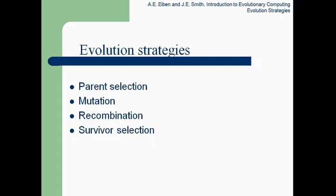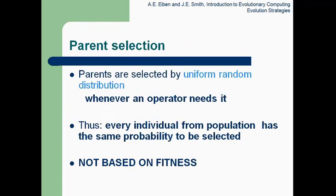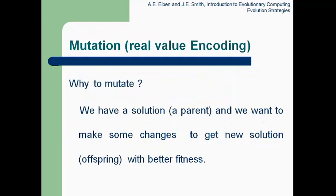Let us start with evolution strategies. In evolution strategies we will learn parent selection, mutation, recombination, and survival selection. For parent selection, a uniform random distribution is used — the parent selection is not based on the fitness of the parent, but every individual from the population has the same probability to be selected. So if we have mu number of parents, every parent will have the probability 1/mu.